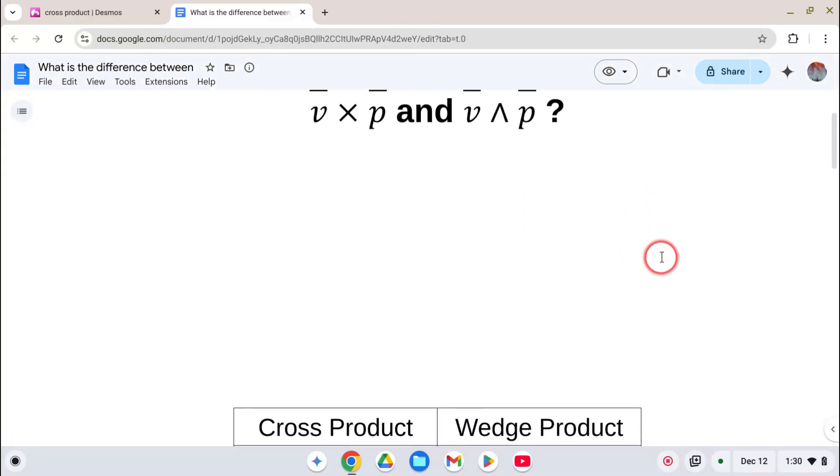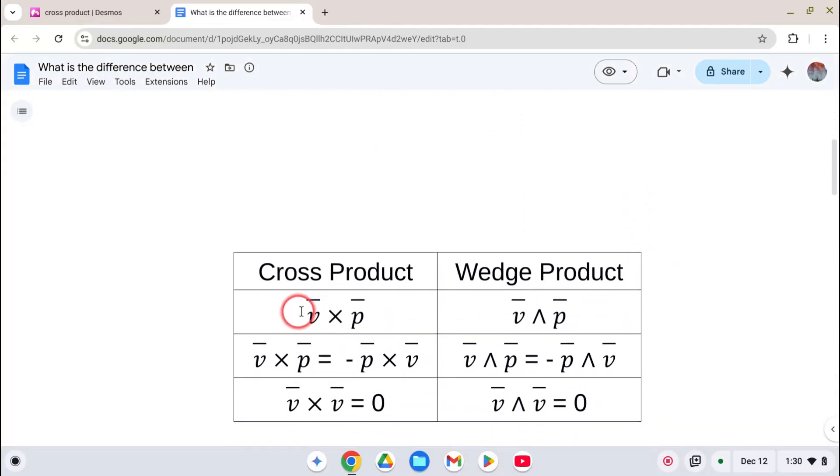But let's look at some of it. Here's what it looks like, the cross product, the wedge product. And you know that V cross P is equal to negative P cross V. They're inverses. The same thing is true for the wedge product. And you also know that V cross V is equal to zero, and V wedge V is also equal to zero.